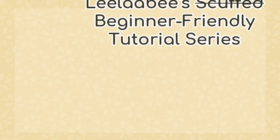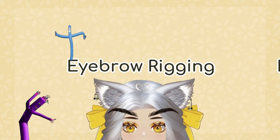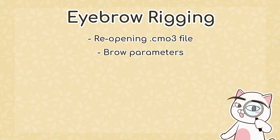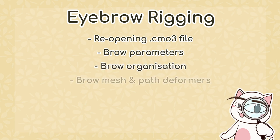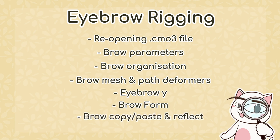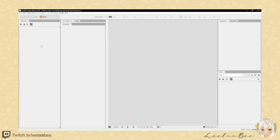Hello, welcome back to another episode — we're up to episode four, and four is my lucky number! Today we're going to do some eyebrow rigging. We'll cover opening your model file, which parameters to use, organizational tips like warp deformers, adding meshes and path deformers, eyebrow Y and form, reflecting the brow by copy-pasting, and then we'll look at physics and scene blending settings.